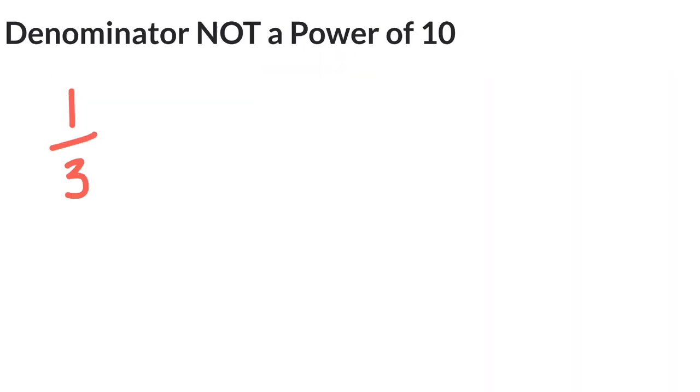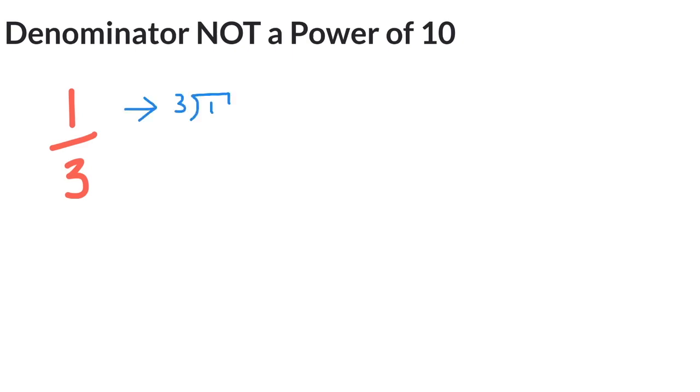As another example, let's try the fraction 1/3. 3 goes into 1 zero times because it is too big, so we'll add a zero and then add a decimal point. 3 goes into 10 three times, 3 times 3 is 9, and our remainder becomes 1.